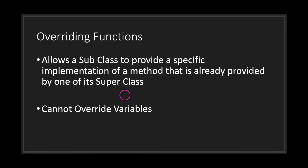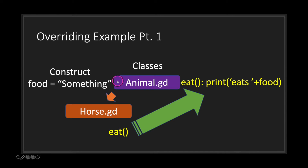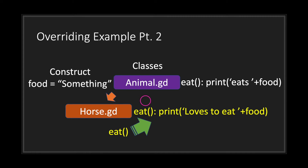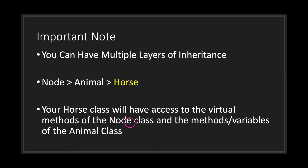The real power of inheritance is the ability to override. In GDScript you are only allowed to override functions — you cannot override variables. Overriding allows a subclass to provide a specific implementation of a method that is already provided by its super class. For example, the animal class has an eat function that prints 'eats food.' If you declare an eat function in your horse class that prints 'loves to eat,' then every time you call eat on a horse object, it calls the horse class's eat function instead of the base class's.